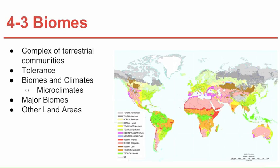Biomes are a complex of terrestrial communities that cover a large area and are characterized by certain soil and climate conditions, and particular assemblages of plants and animals.